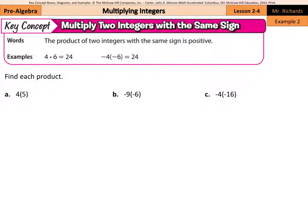The other part of multiplying two integers would be two integers with the same sign. So if we have a positive number times a positive number, that product is a positive number — same as it's always been. What might be different, though, is a negative number multiplied by a negative number is going to be a positive number.